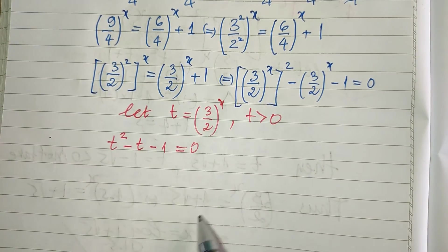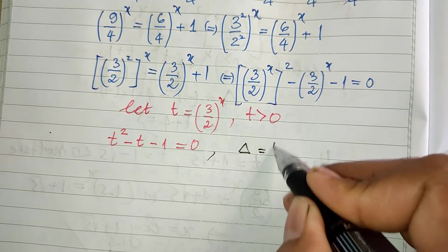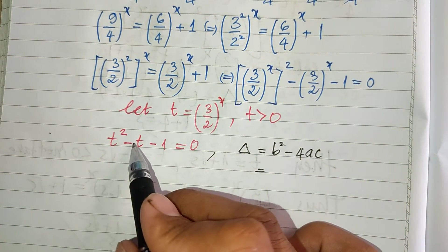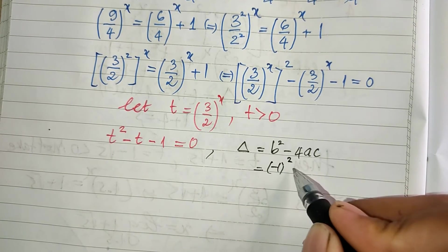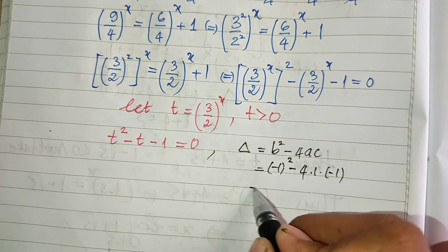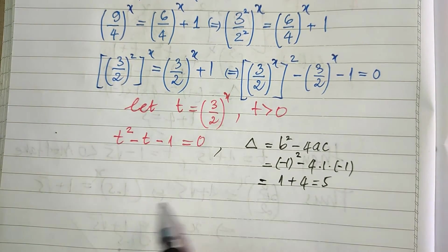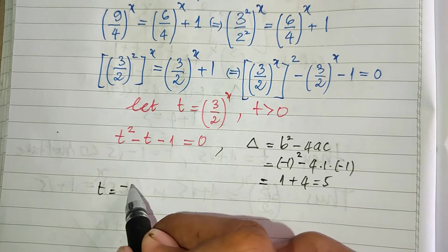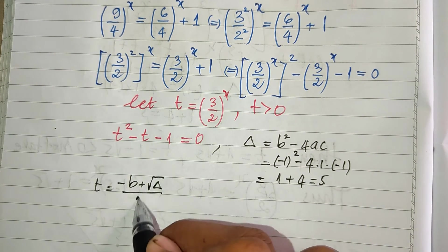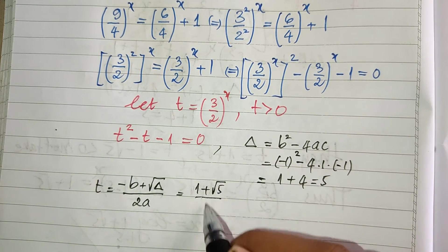This equation is of second degree, so we use the discriminant. Delta equals b² minus 4ac. Here b = −1, so we get: (−1)² minus 4 × 1 × (−1) equals 1 plus 4 equals 5. So t equals (−b ± √delta) / (2a) = (1 ± √5) / 2.